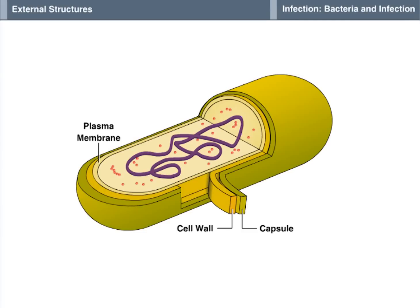In some bacteria, this material is not organized and is more loosely attached. In this case, it is called a slime layer. A capsule can help the bacterium survive harmful environmental changes and provide effective protection against an attack by the host's defense system.